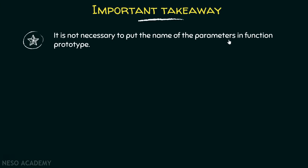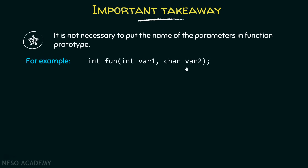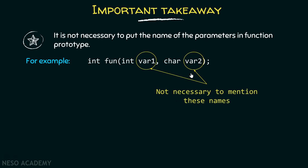It is not necessary to put the name of the parameters in the function prototype. Here you can see this is the function prototype, and in the parameter list you have written the names of the parameters as well, which is not necessary. You can simply write the data type of these parameters, and that is enough in a function prototype. Although writing parameter names is also correct, it is not necessary. It is important to mention parameter names in the function definition, but not in the function declaration.